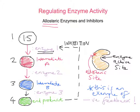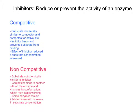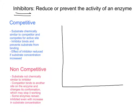Now let's look at inhibitors, because inhibitors are chemicals that can reduce or prevent the activity of an enzyme, and this is a clear way of regulating their activity. There are two that we tend to look at: competitive and non-competitive inhibitors. I'm going to draw a diagram to explain the difference, and I'll also give some examples of both types.